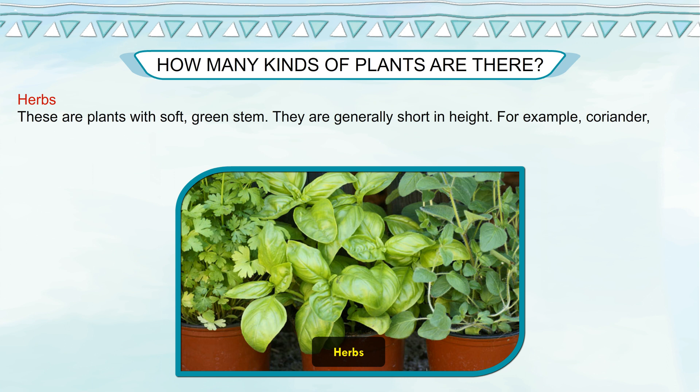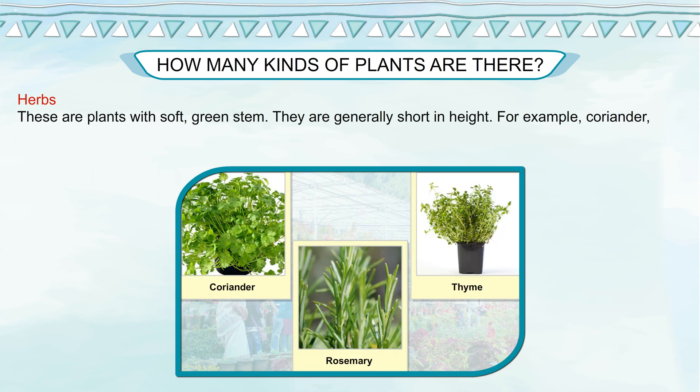Herbs: these are plants with soft green stem. They are generally short in height. For example, coriander, rosemary and thyme.